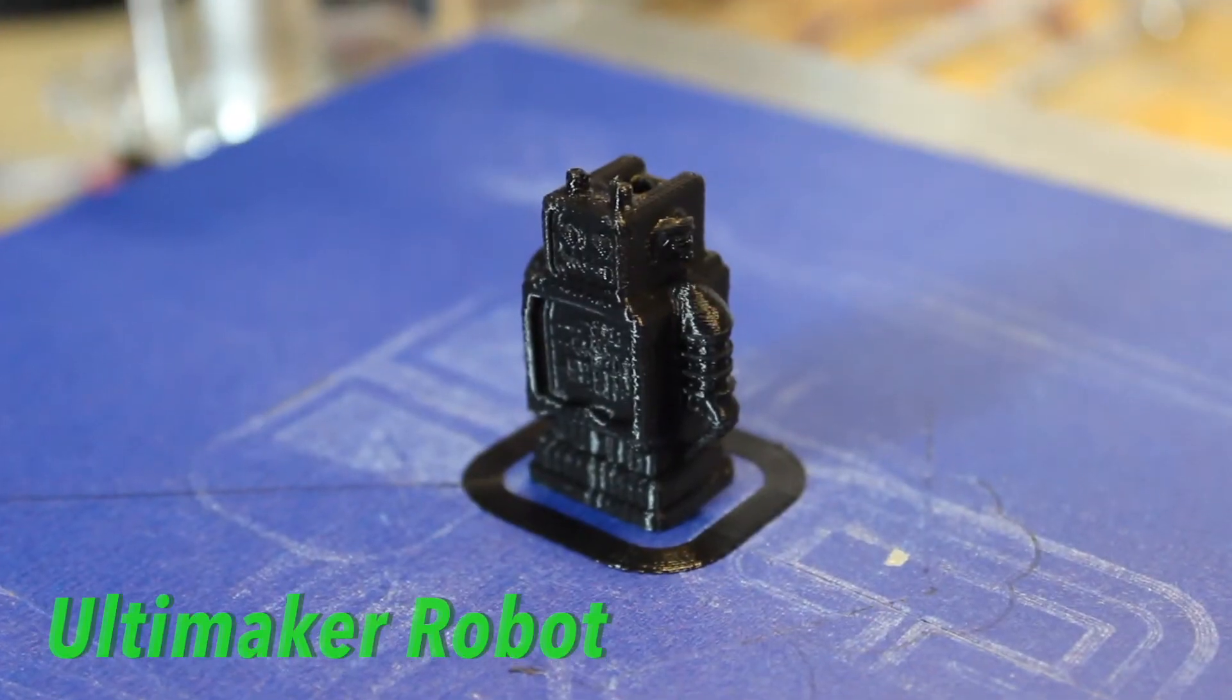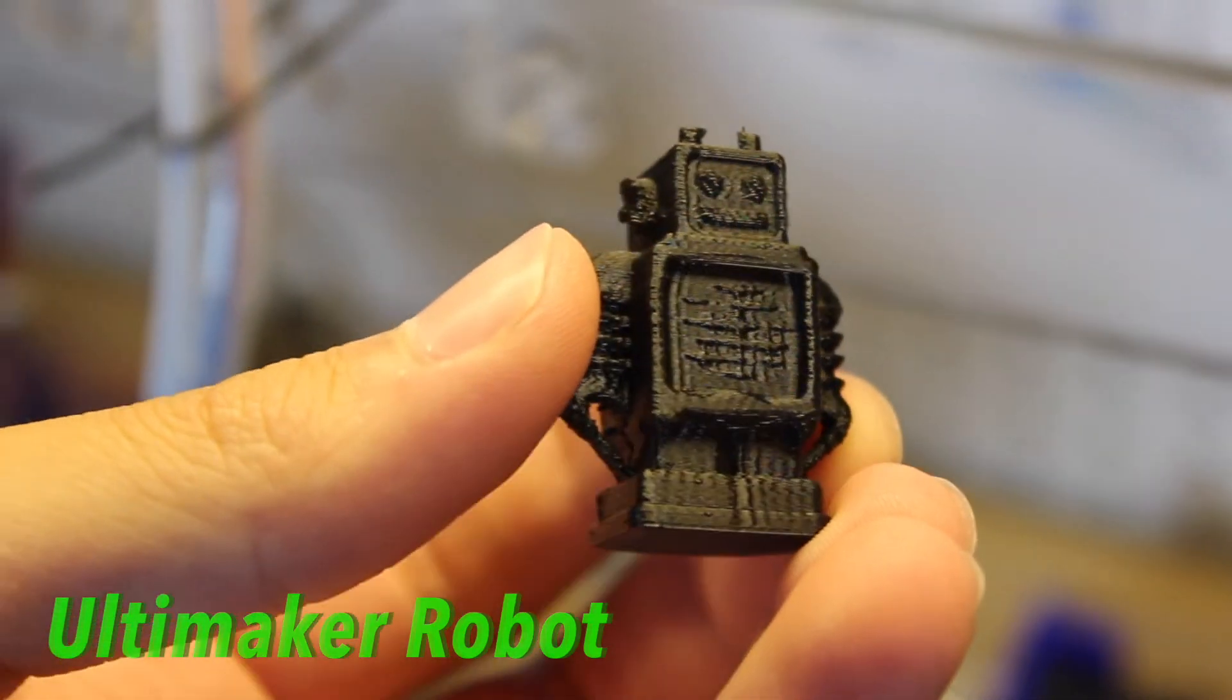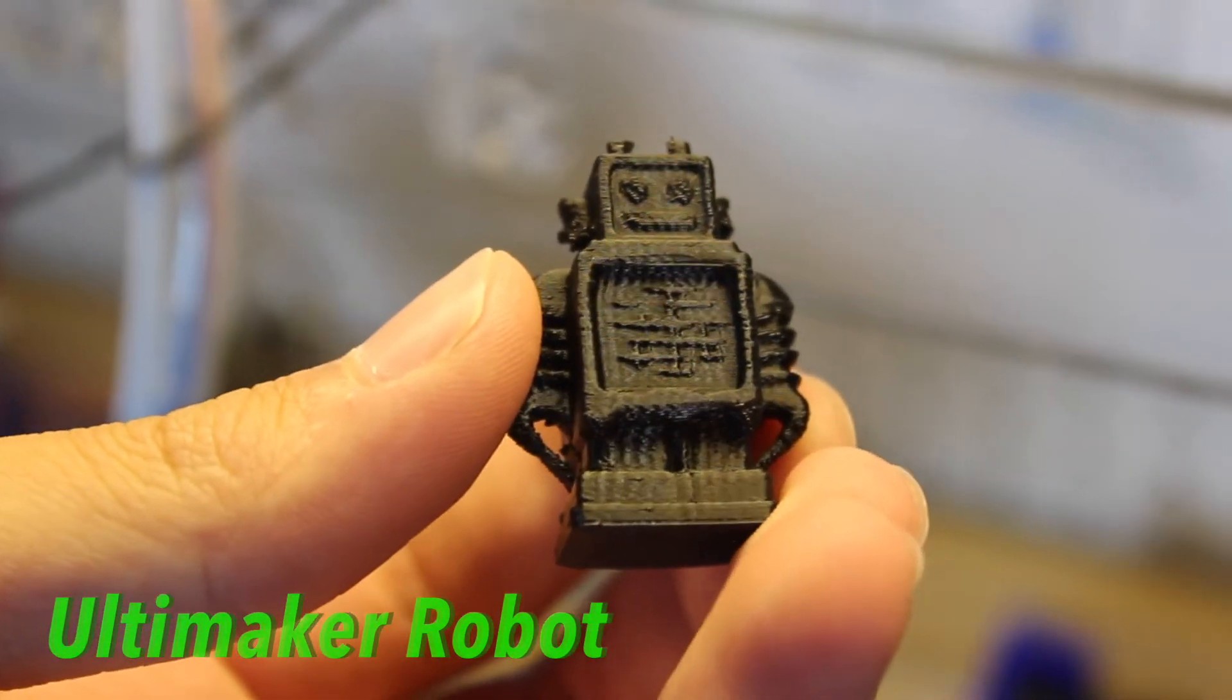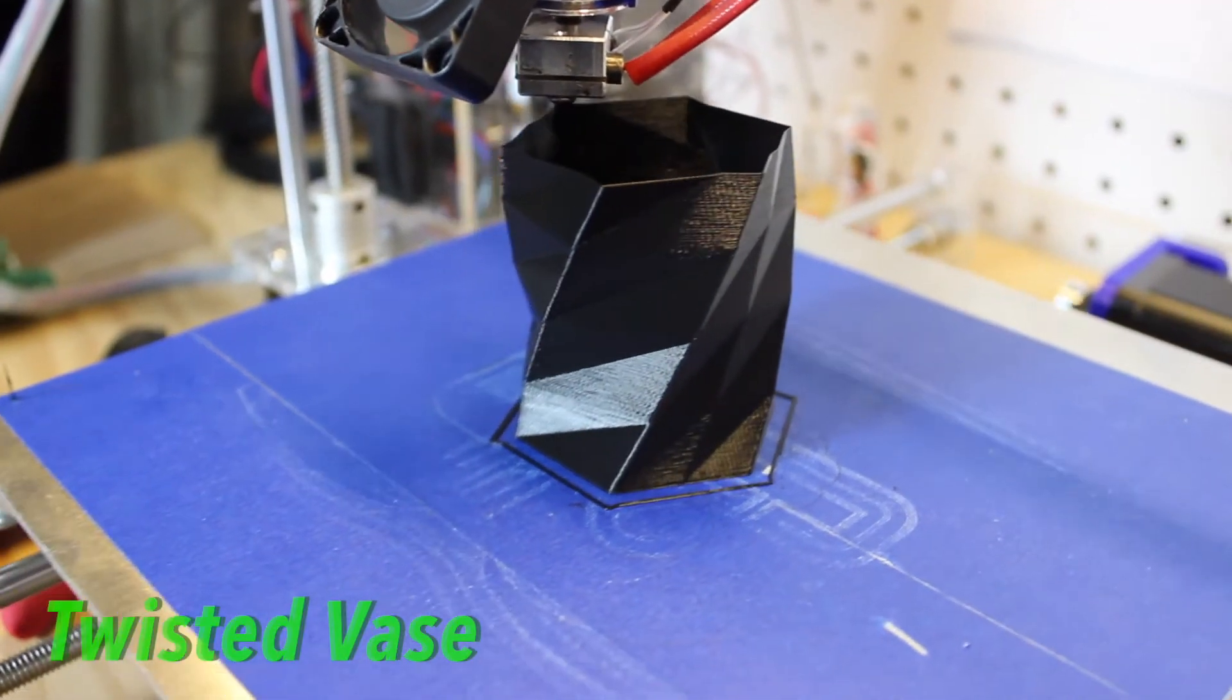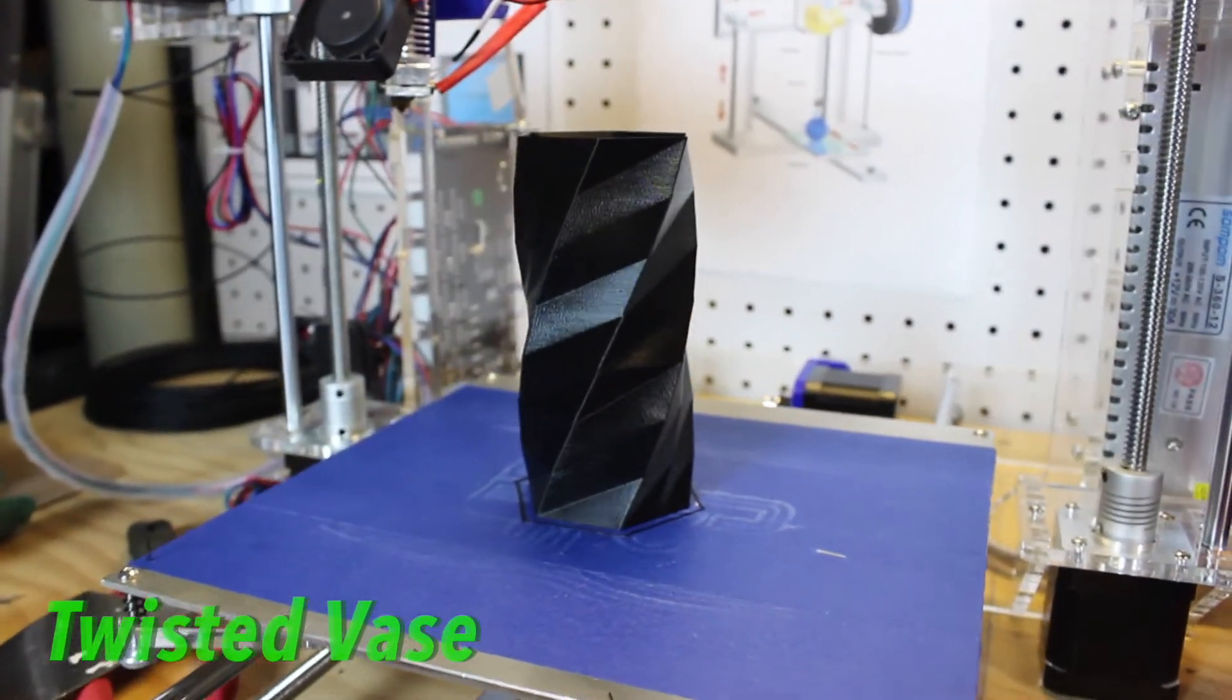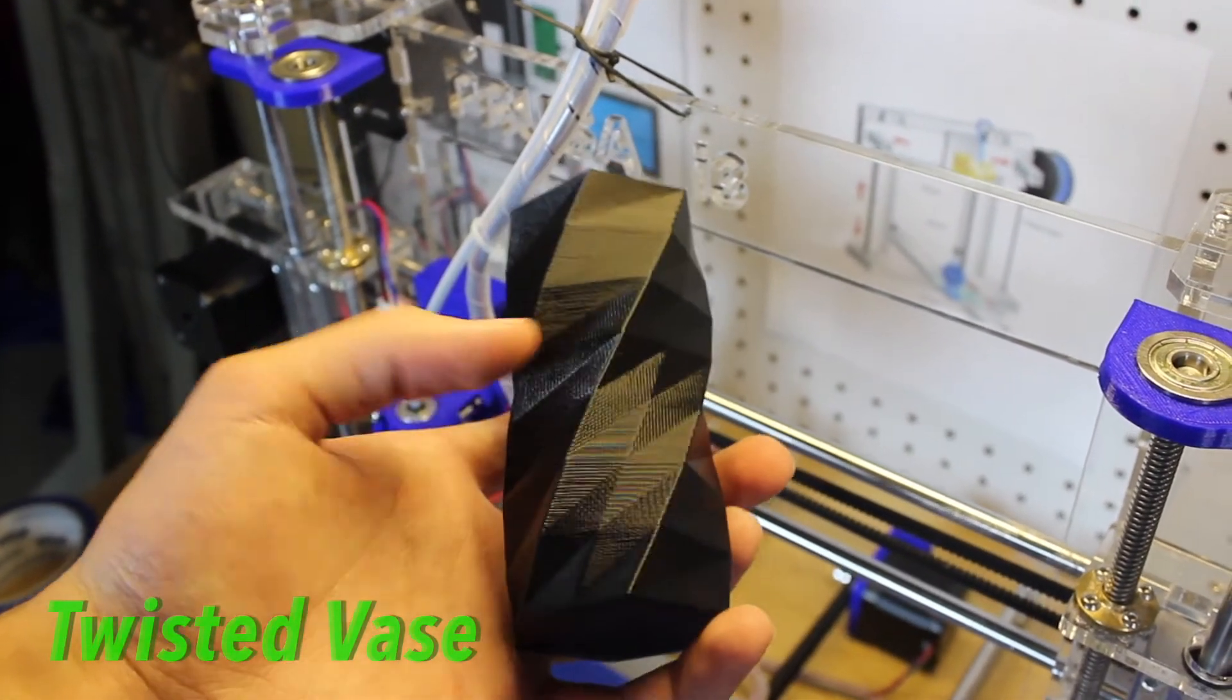Moving on, I printed a little Ultimaker robot which was more of a small high detail print. And again this turned out pretty well. The next print was a twisted vase which is what I usually print for filament reviews. And like the other prints I did, this turned out fantastic with that awesome shiny black finish.